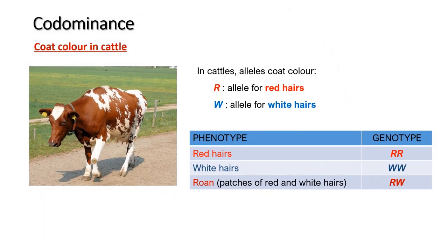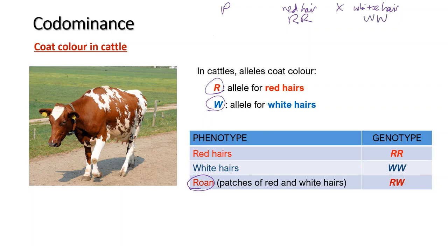This diagram shows a cattle with patches of red and white hairs known as roan. In cattle, coat color is controlled by two alleles: R for red hair and W for white hair. When a homozygous red-haired parent is crossed with a homozygous white-haired parent, the gametes produced lead to F1 offspring with genotype RW — heterozygous with roan coloring, which is patches of red and patches of white, just as observed in the parents.